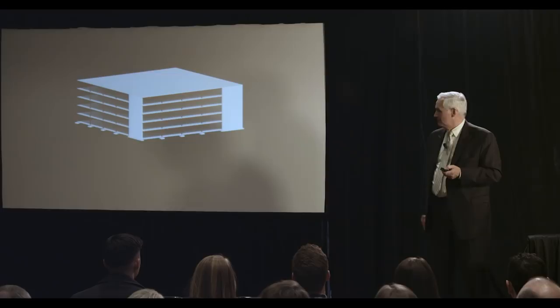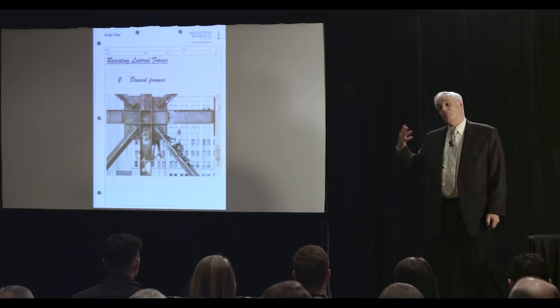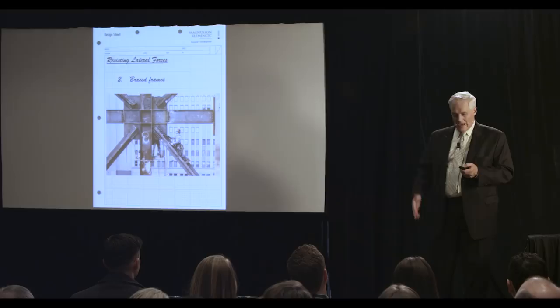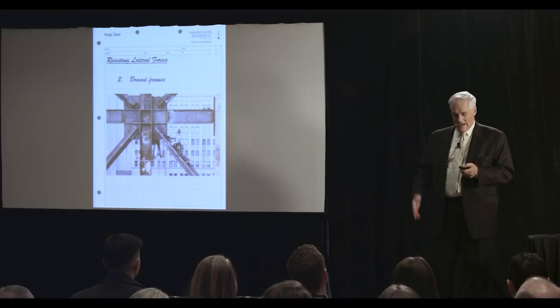The other, brace frames. And this is primarily steel brace frames, primarily steel structures. But that's where you actually put diagonals in. It's pretty straightforward, pretty intuitive. You have your gravity system and you add the bracing, and that's what provides the resistance for the building.